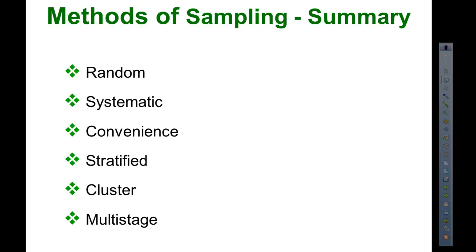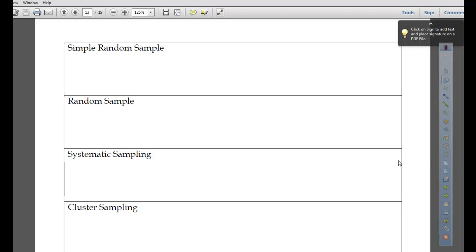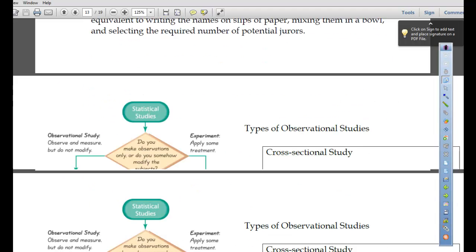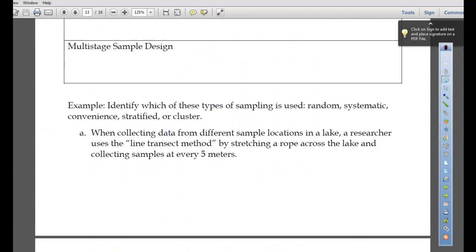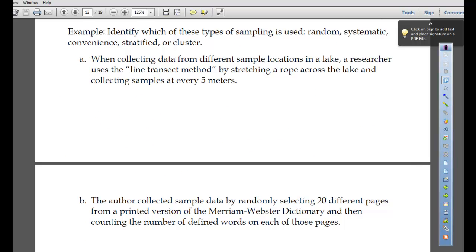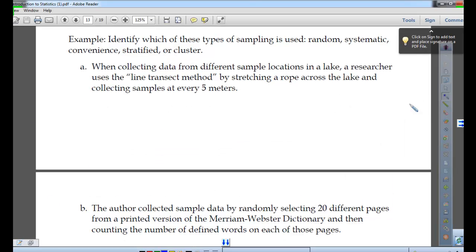Identify which of these types of sampling is used: random, systematic, convenient, stratified, or cluster. When collecting data from different sample locations in a lake, a researcher uses the line transect method by stretching a rope across the lake and collecting samples at every five meters. What does that sound like? Systematic. That's the one that I thought was really interesting. I never really considered that it could be a physical point or whatever. So systematic sampling, very good.